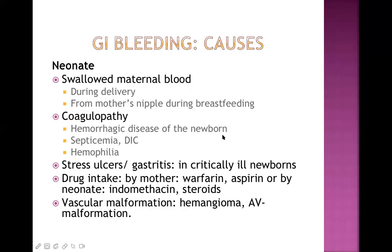Another cause in neonates is coagulopathy. Hemorrhagic disease of the newborn is caused by vitamin K deficiency — vitamin K is essential for activation of clotting factors II, VII, IX, and X. Septicemia and DIC are other causes: sepsis leads to DIC and impairs platelet function, increasing bleeding risk. Disseminated intravascular coagulation, known as consumption coagulopathy, consumes clotting factors and platelets, creating relative deficiency leading to hemorrhage.